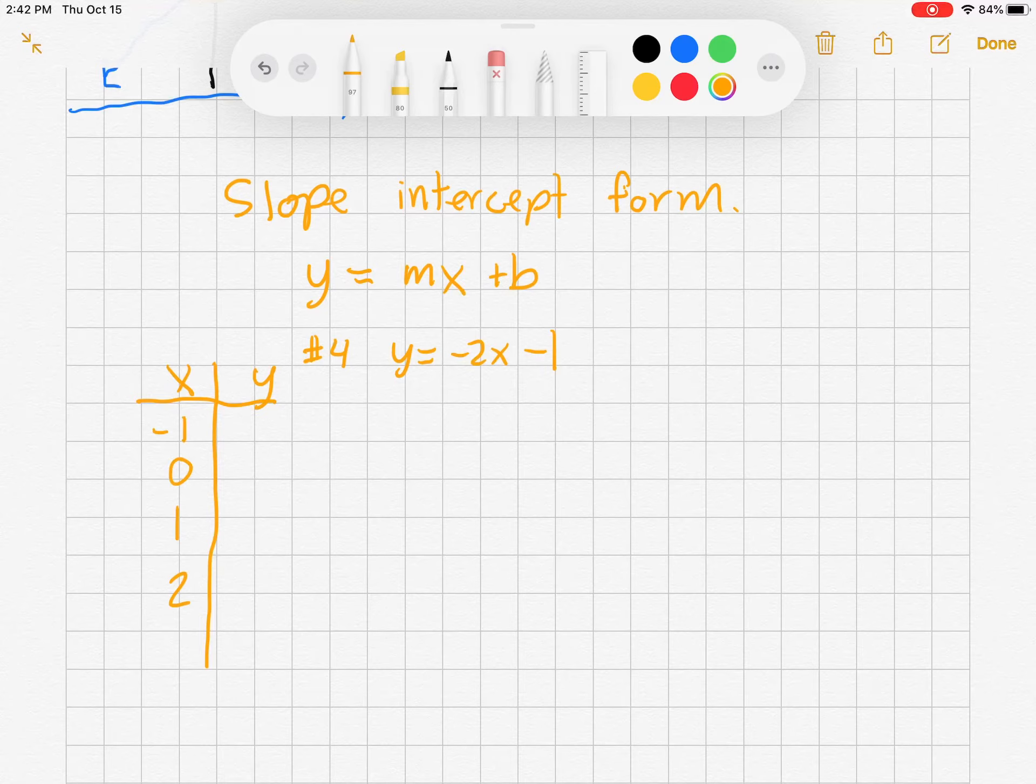Plug them in for x here. So let's go y equals negative 2 times negative 1 minus 1. So negative 2 times negative 1 is 2, minus 1 is 1.